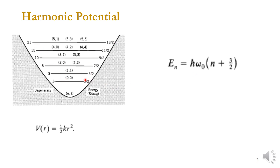Looking at the degeneracy for the harmonic oscillator model, we see: 1, 3, 6, 10, 15, and so on for successive energy levels.